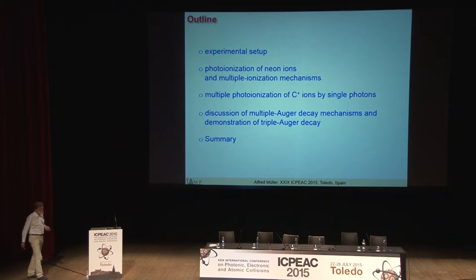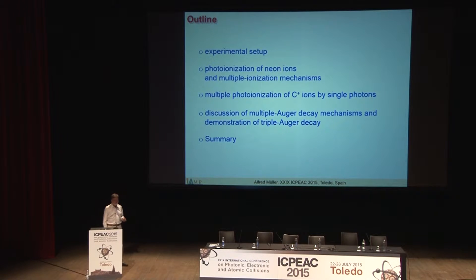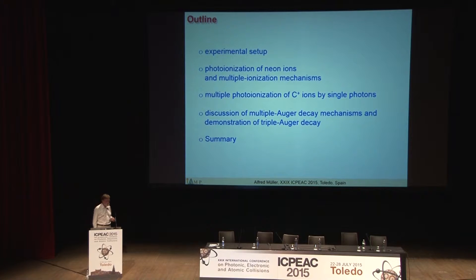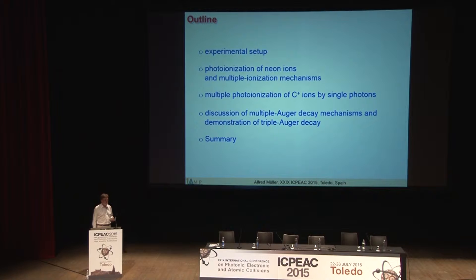Here's an outline of my talk. I will say a few words about our experimental setup. I will show photoionization of neon ions near the K edge, and I will talk about multiple ionization mechanisms. I will present some results on multiple photoionization of carbon 1+, and I will discuss multiple Auger decay processes and demonstrate that we really observed triple Auger decay. I will end with a summary.